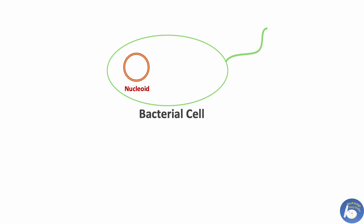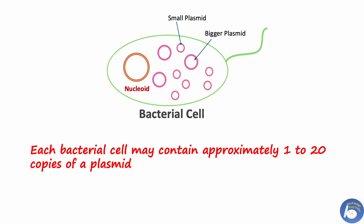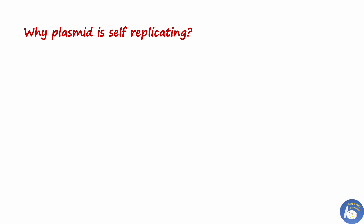A bacterial cell contains a certain number of plasmids. Smaller plasmids can be more in number, whereas larger ones can be fewer. Each bacterial cell may contain approximately 1 to 20 copies of a plasmid. The number of plasmid copies within a bacterial cell is known as the copy number of the plasmid.